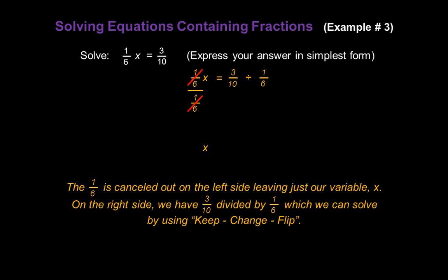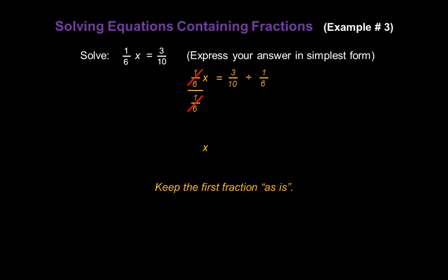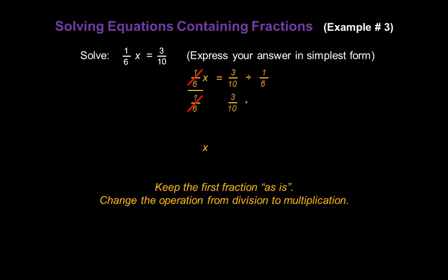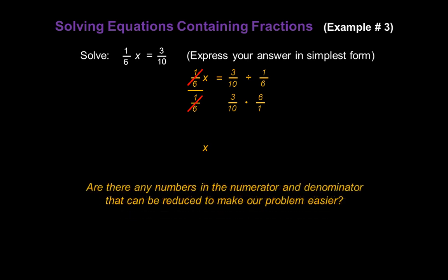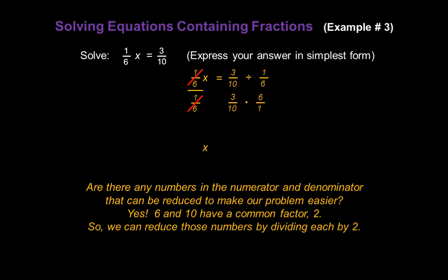When we divide fractions, I turn them into multiplication problems using keep, change, flip. Keep the first fraction as it is — rewrite three-tenths. Change the operation from division to multiplication. And finally, flip the second fraction to get its reciprocal: one over six becomes six over one. Now that we have fractions we're multiplying together, are there any numbers in the numerator and denominator that can be reduced to make our multiplication easier? Yes — six and ten have a common factor of two. Ten divided by two becomes five, and six divided by two becomes three.